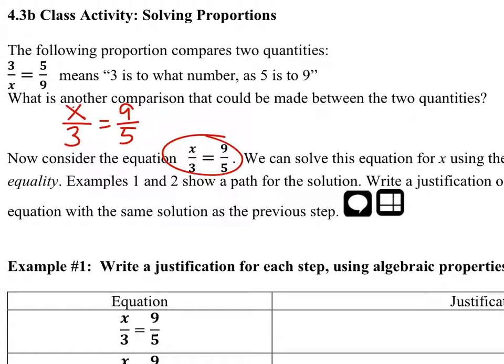So let's consider that. We can solve this equation using the multiplication equality, which is the same as multiplying both sides by three. So then we get the one x equals 27 fifths.